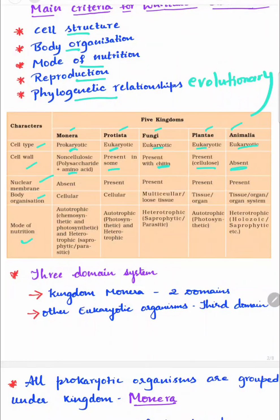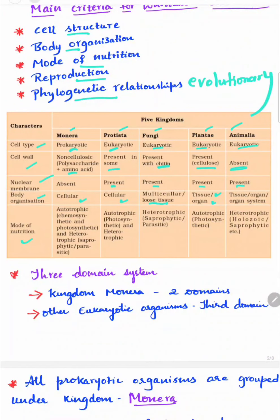Nuclear membrane is absent in Monera, hence it is prokaryotic. It is present in Protista, Fungi, Plantae, and Animalia. Body organization in Monera is cellular. Protista is also cellular, whereas Fungi is multicellular loose tissue. Plantae is made up of tissue and organ. Animalia has tissue, organ, and organ system.